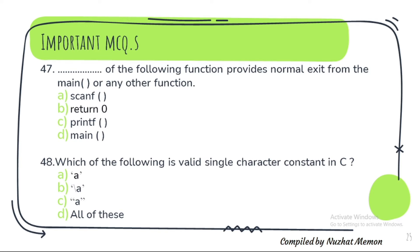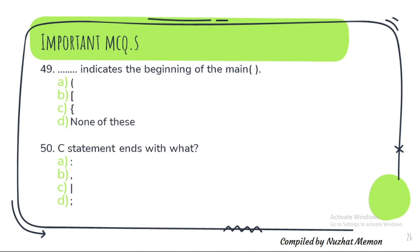Question 47: Which of the following functions provides normal exit from the main or any other function? Option B — that is return zero. Question 48: Which of the following is a valid single character constant in C? Option A. Question 49: What indicates the beginning of main? It is curly bracket — option C.